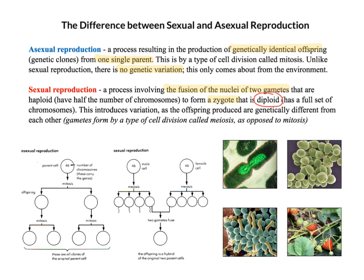In the sexual reproduction definition, this part introduces variation - that is the most crucial element to this definition when comparing asexual and sexual reproduction. The offspring produced through sexual reproduction are genetically different to one another. So for asexual reproduction: genetically identical offspring, one single parent, no genetic variation.